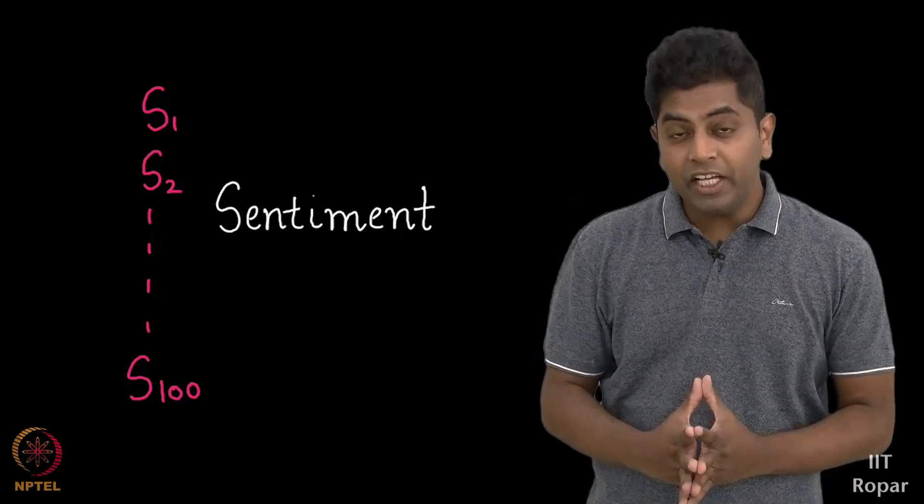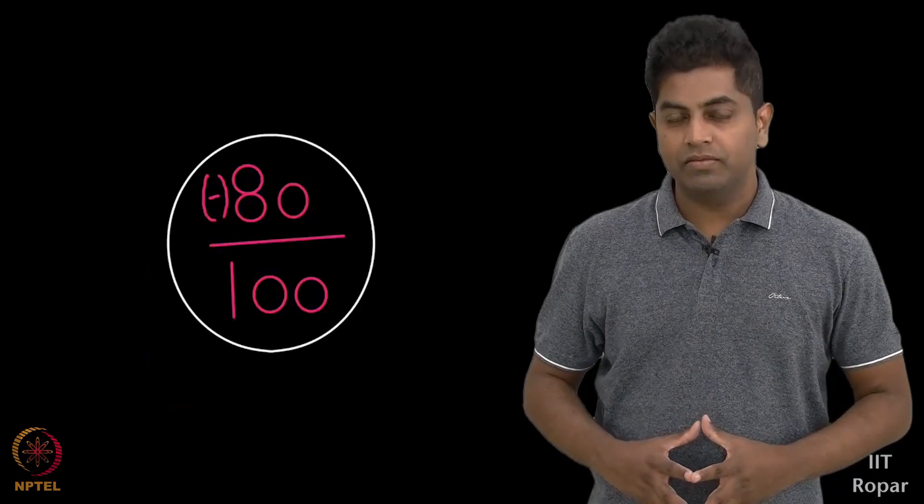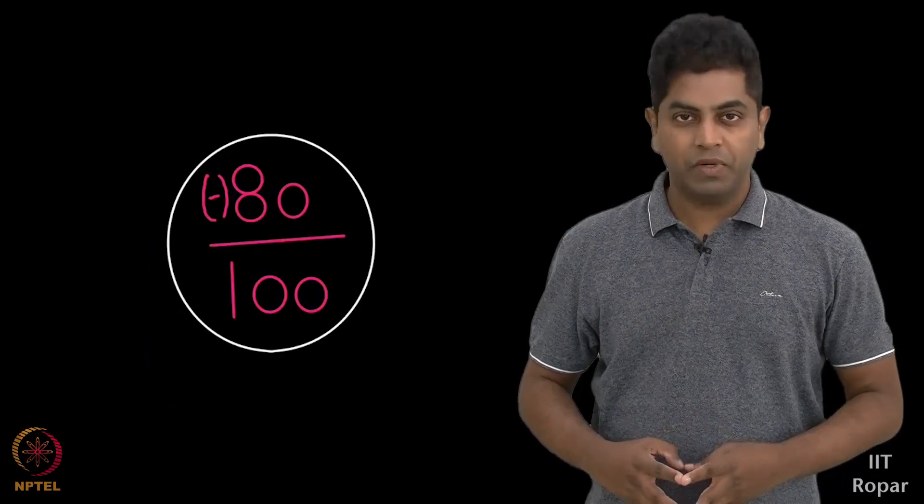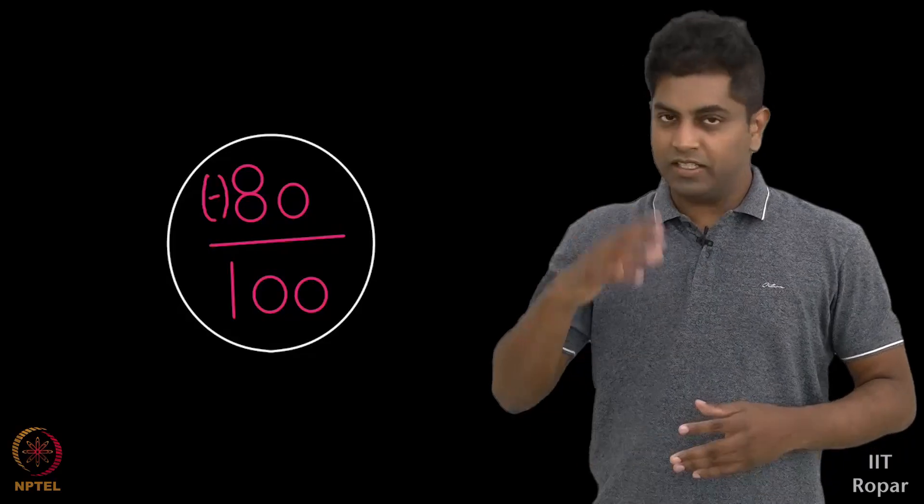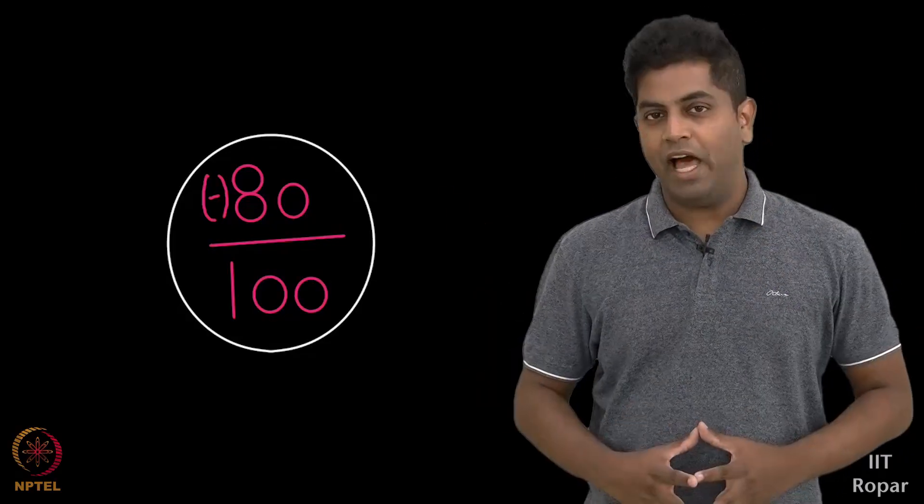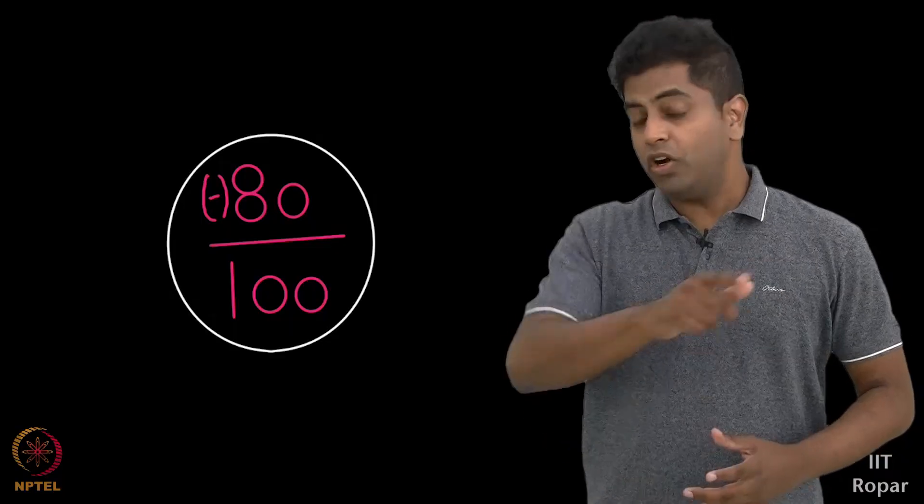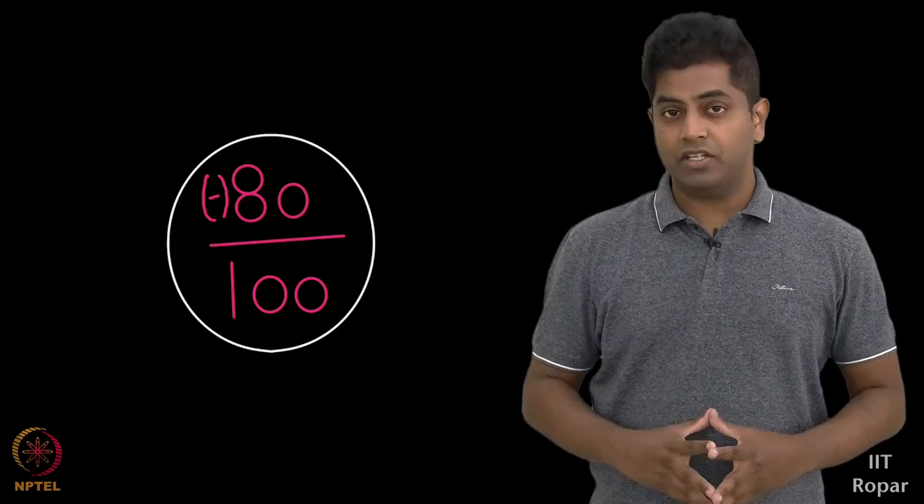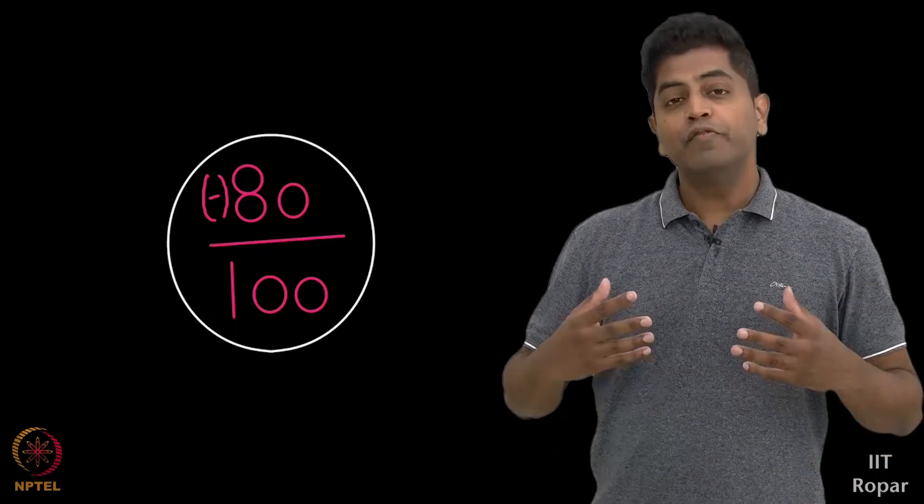Assume 80 on 100 were negative, which means this person is undergoing some trauma in his life or isn't in general a happy person.